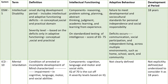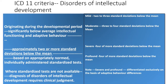In ICD-10, the term used is 'mental retardation,' defined as a condition of arrested or incomplete development of mind characterized by impairment in cognitive, language, motor, and social abilities. An IQ of 70 is the cut-off, with four severity levels defined based only on IQ. Adaptive behavior was not clearly defined, and the developmental period, though not explicitly stated, is understood as 18 years.